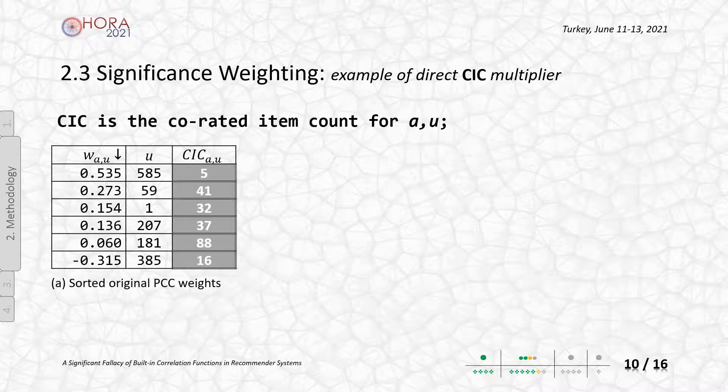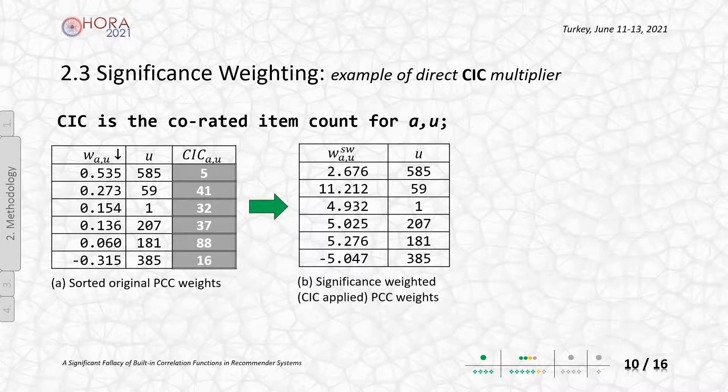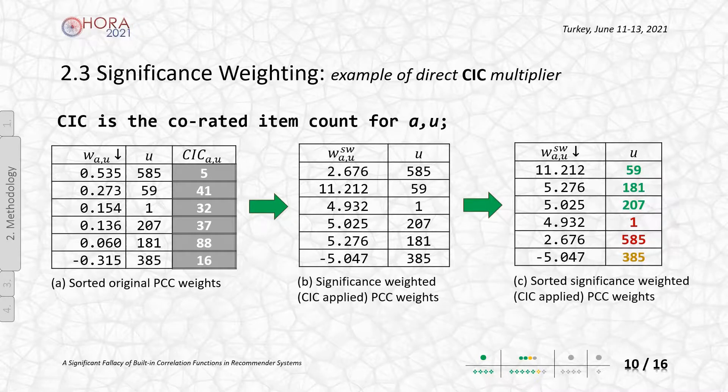Let's give a quick example for CIC. Let's assume the weights are like this. You can see the values in the first column. When we multiply the weights with the correlated item counts, the naive boosted weights are obtained. And sorting of the neighbor weights can be effectively changed afterwards. You can see that.